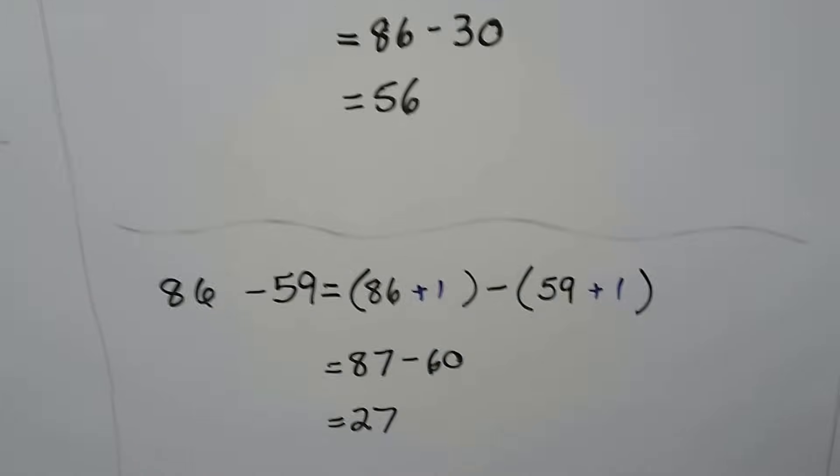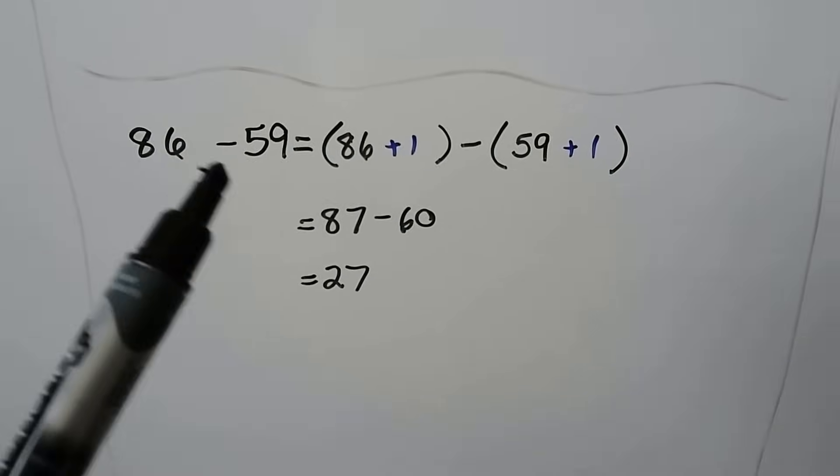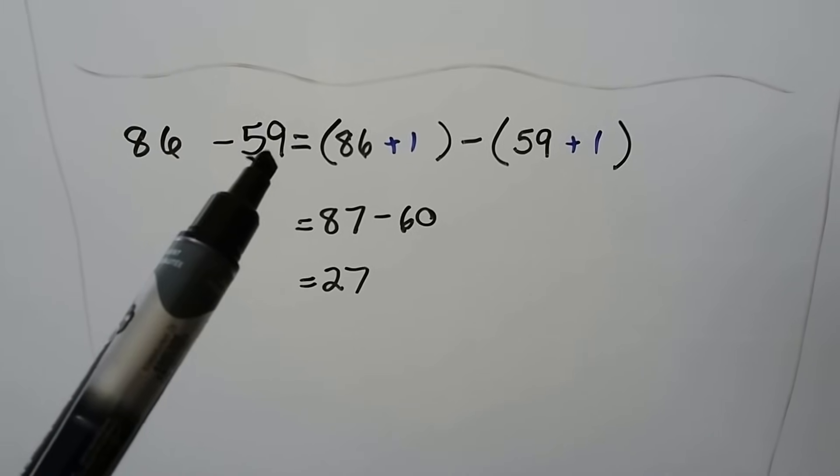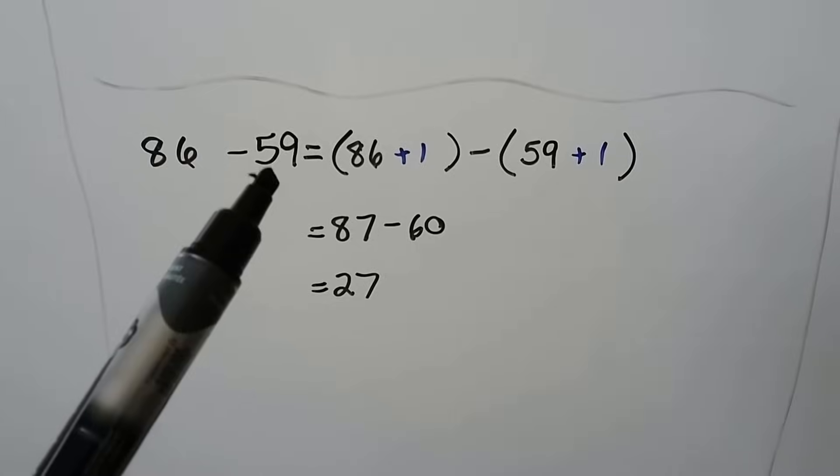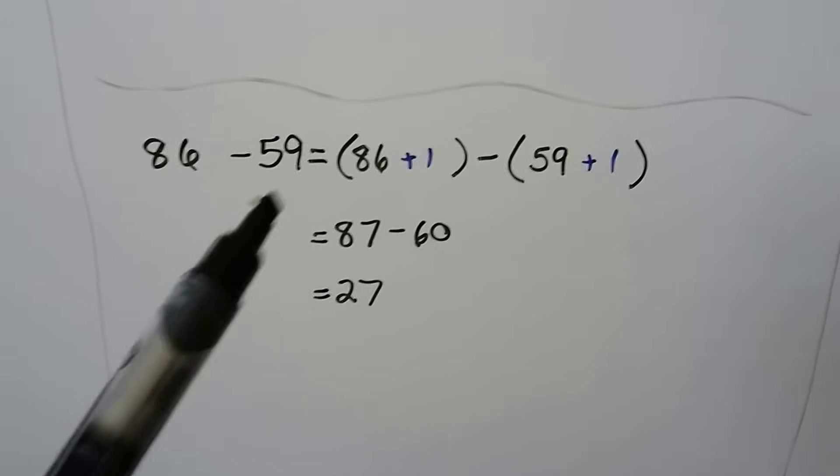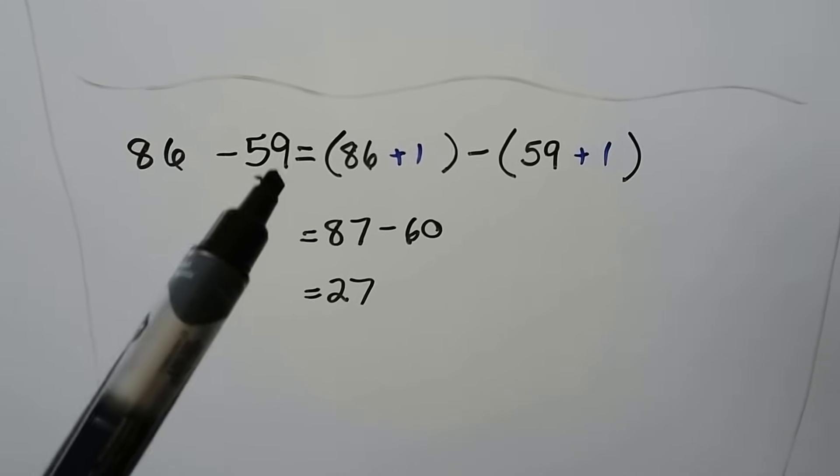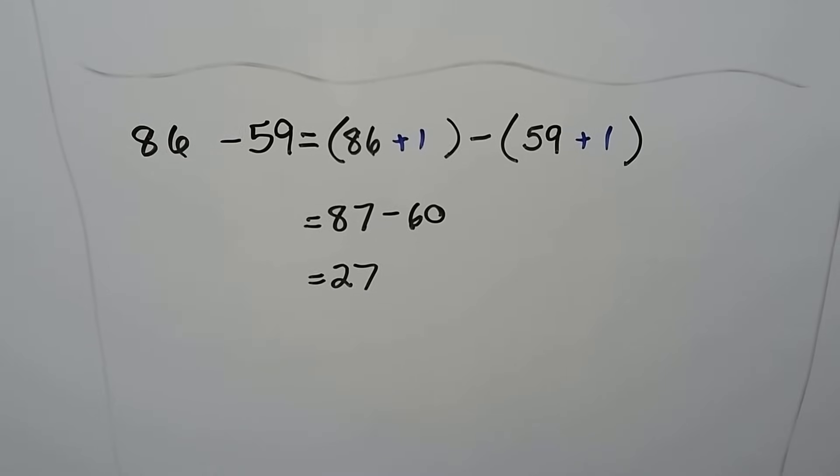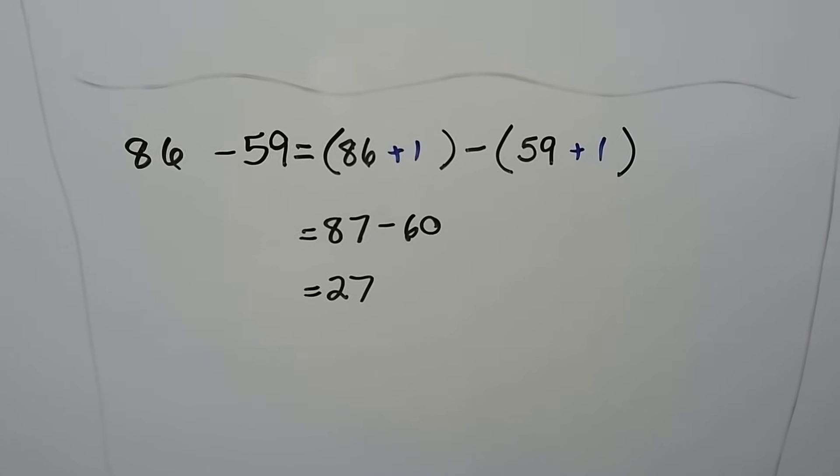Let's try another one. We have 86 minus 59. It would be a lot easier to subtract 60. It only needs one more. So let's add 1 to the 86 and 1 to the 59. And now we have 87 minus 60, which is 27.